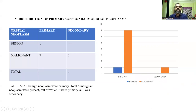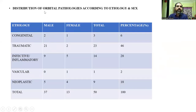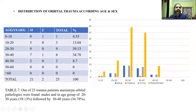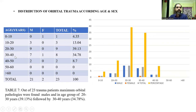Distribution of primary versus secondary tumors: one was benign; among malignant conditions, 7 were primary malignant and 1 was secondary. Distribution of orbital pathologies by etiology shows maximum cases were traumatic and males were more affected than females. Distribution of orbital trauma according to sex and age shows maximum cases were males, with only two female cases. Cases were maximum in the age groups of 20 to 30 and 30 to 40.